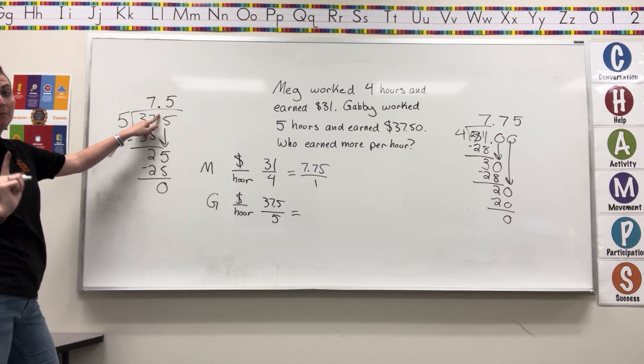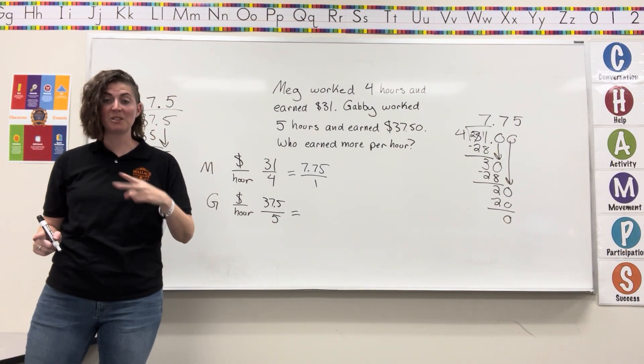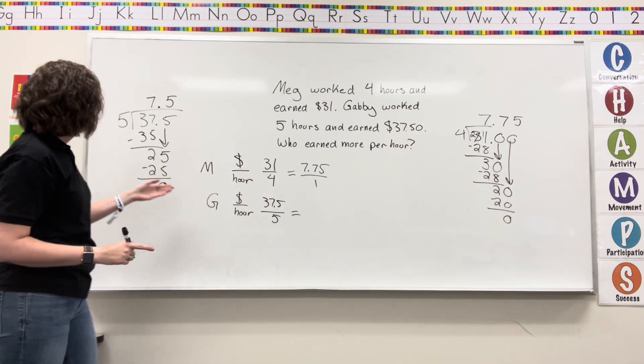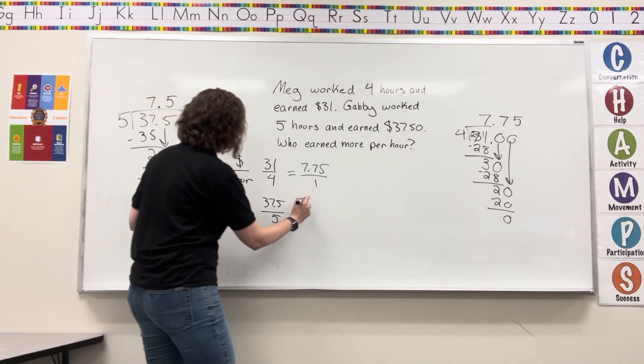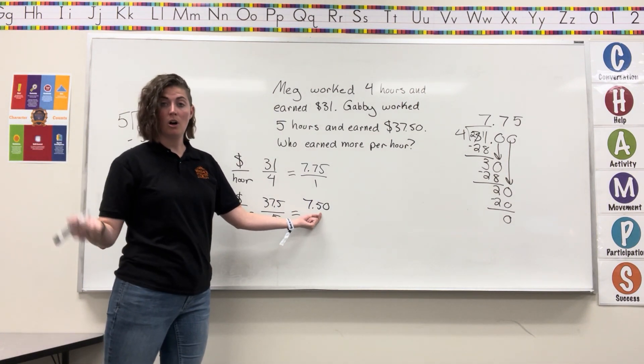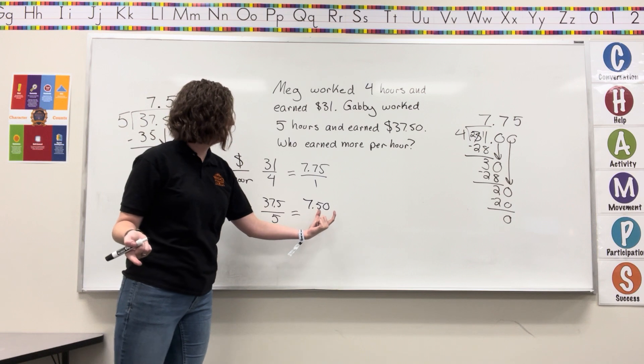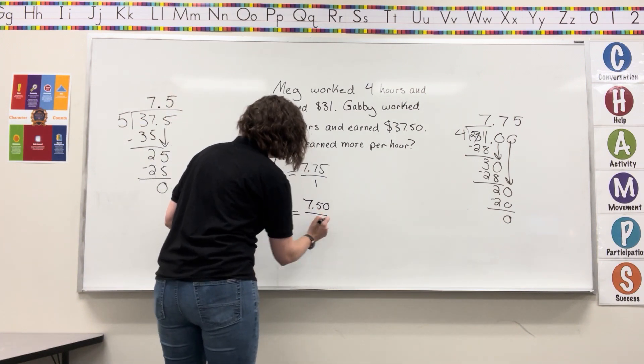I'm dealing with money, and money always has two numbers behind the decimal. So it's not seven dollars and five cents. It's actually seven dollars fifty cents. We use a placeholder zero, always when we have money, two digits behind the decimal per hour.